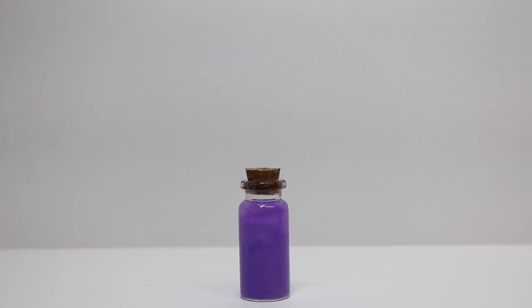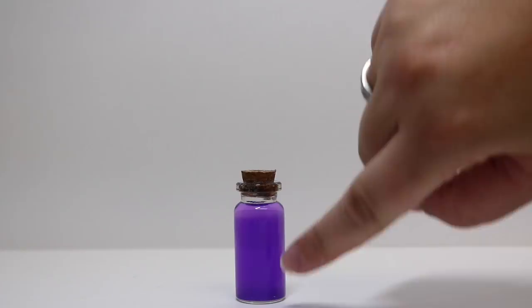Okay, so as you can see, this has sat now for about an hour, hour and a half, and all of the mica is now at the bottom of the jar but the solution is still kind of a purple color. So we're going to go ahead and dump out the purple alcohol and then refill it with clear.